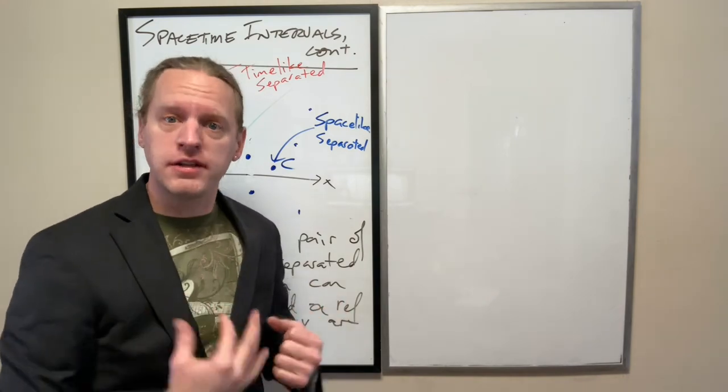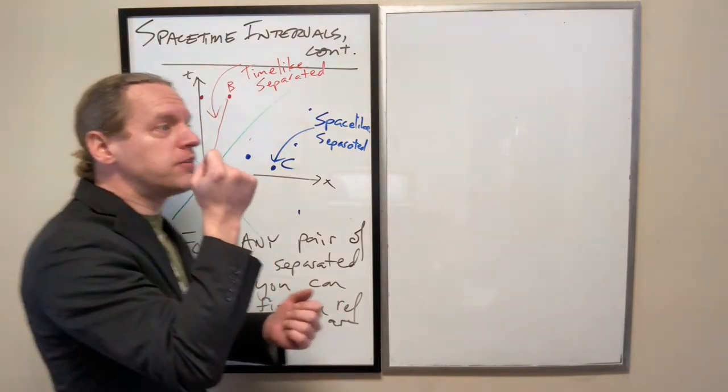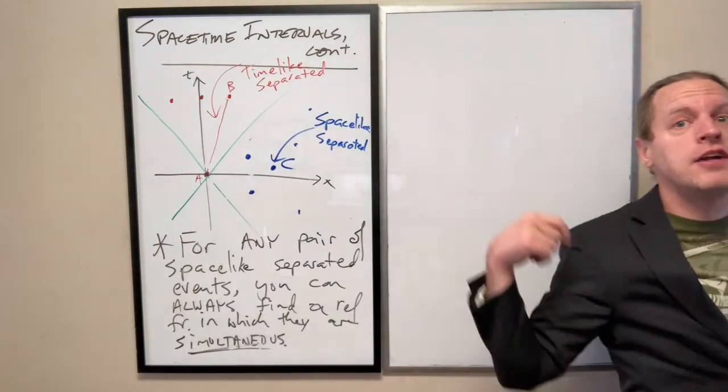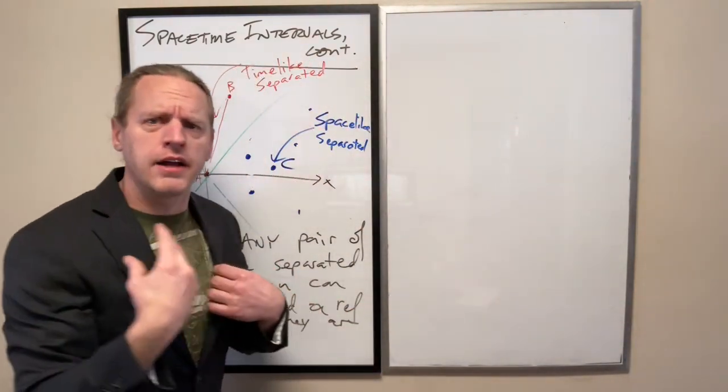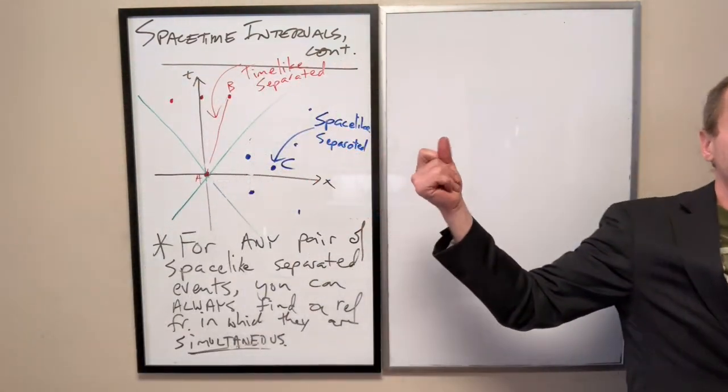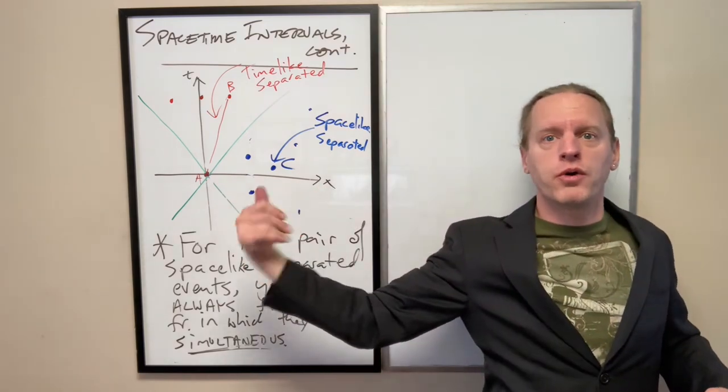Now, what would happen if you walked slightly too fast? Event A happens, and then now event B happens a little bit behind you. So I hope you saw that. Event A happened, and now I walk too fast so that B now happens behind my origin.